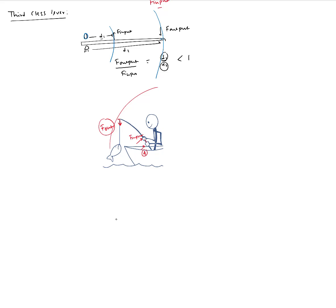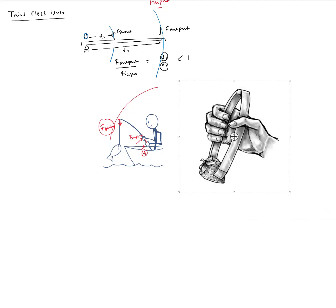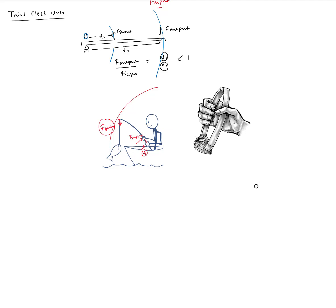A tong is another example of a third class lever. The fulcrum is at the hinge, the input force is where you squeeze the tong, and the output is at the gripping end where it contacts the food. The input is closer to the fulcrum, so there's no force advantage, but you gain a larger range of motion to open the tong wide enough to hold objects like a strawberry.